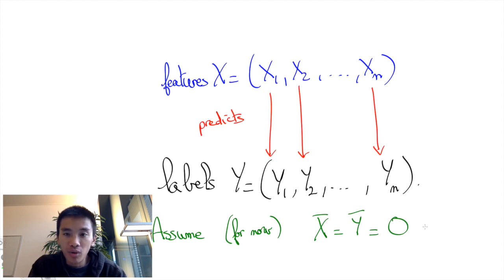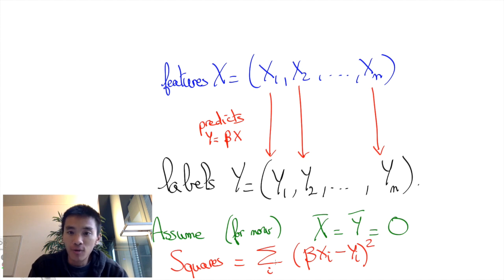Then linear regression boils down to determining the slope beta that minimizes the sum of squares S equals the sum of (beta*xi - yi)^2. This is the prediction given by the linear approximation minus yi, the actual label. We square that to take the sum of squares, and we want to minimize with respect to beta.